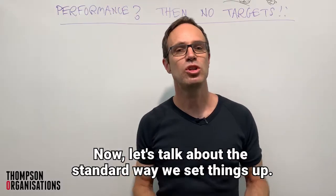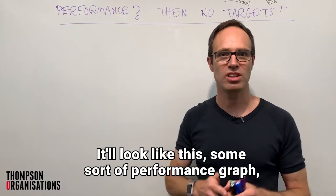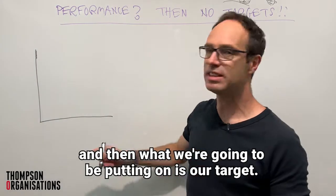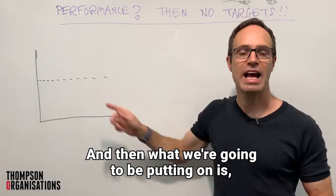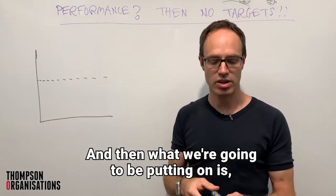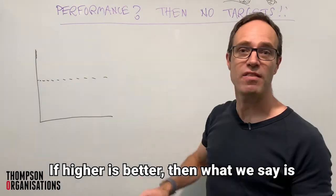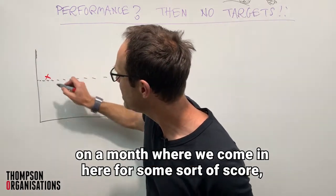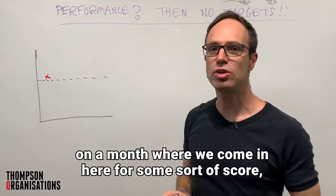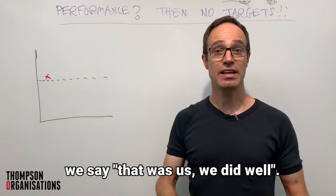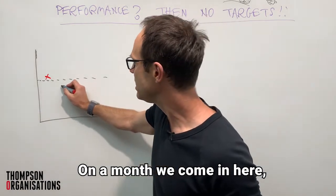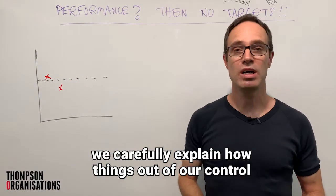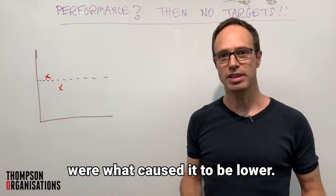Now let's talk about the standard way we set things up. It'll look like this — some sort of performance graph, and then what we're going to be putting on is our target, and then the performance each month. If higher is better, then on a month where we come in above the target, we say we did well. On a month we come in below, we carefully explain how things out of our control were what caused it to be lower.